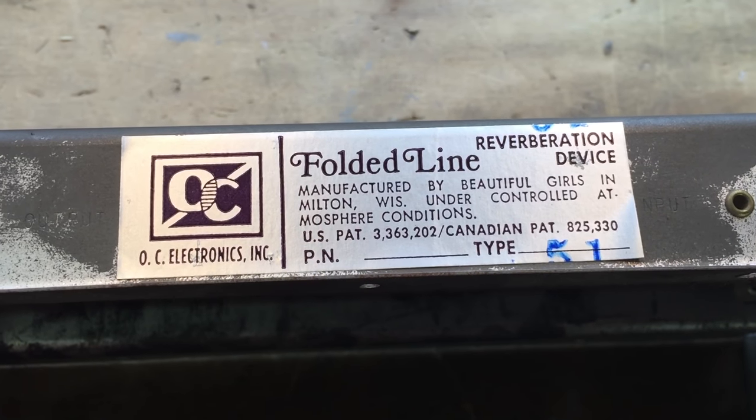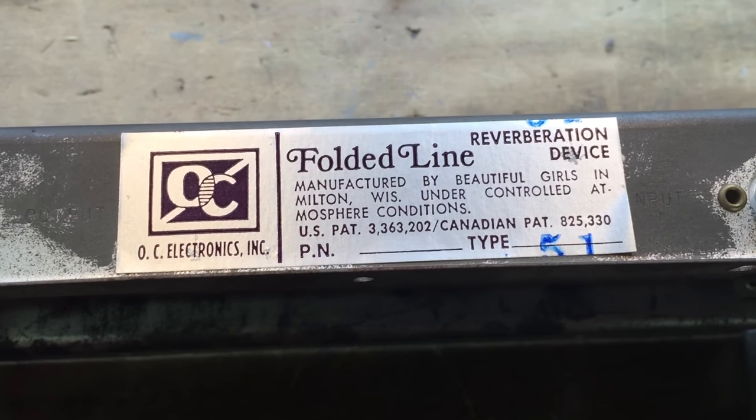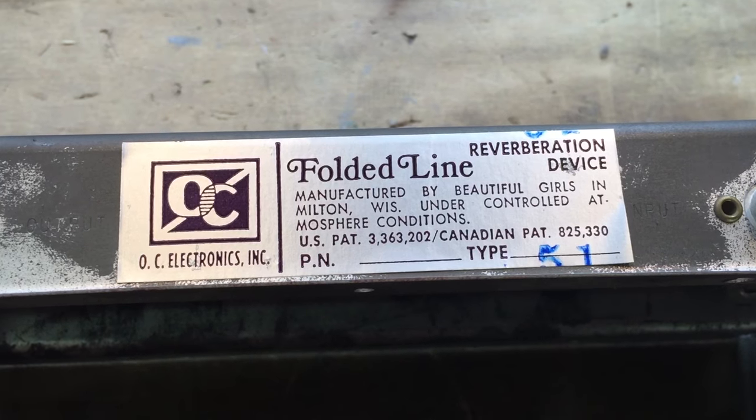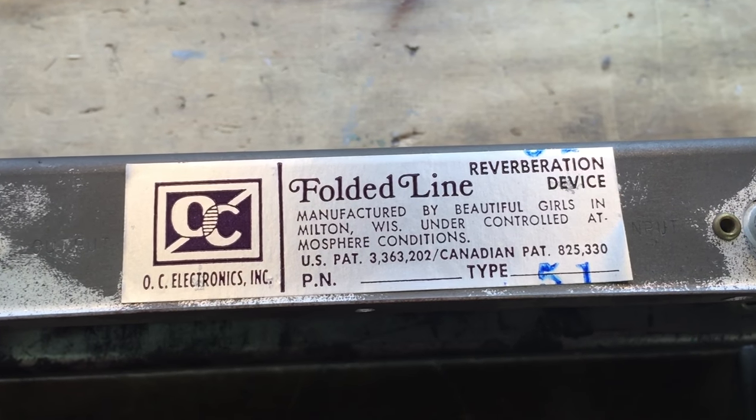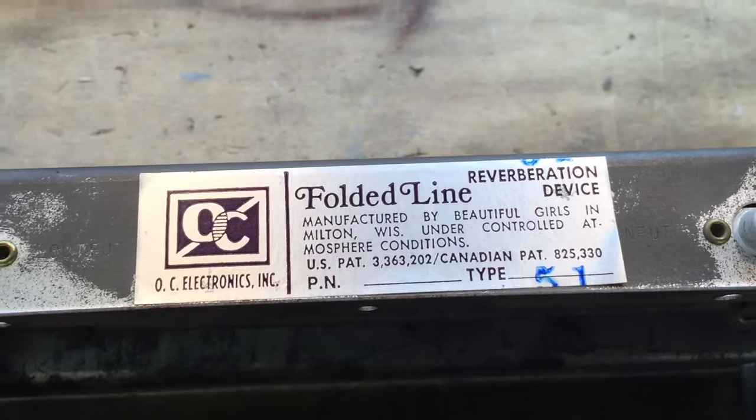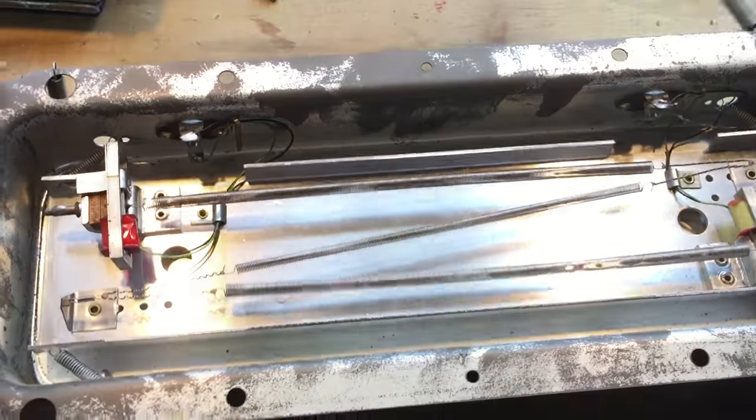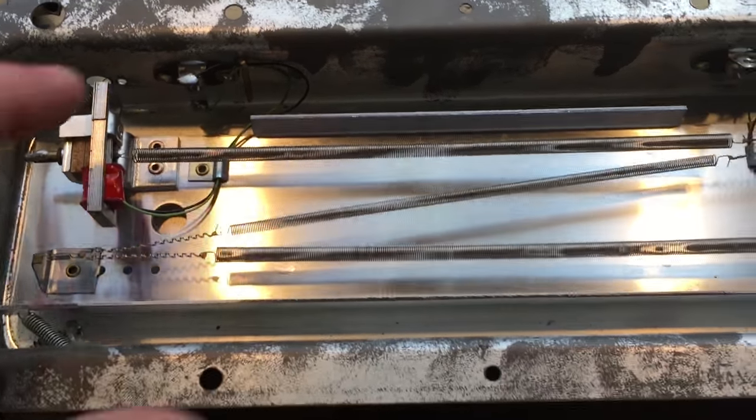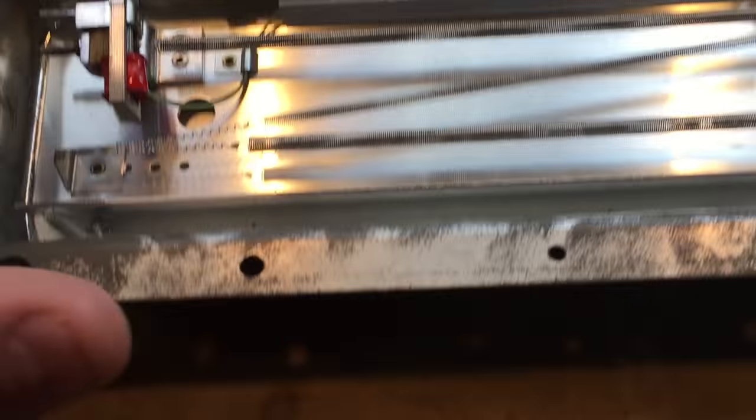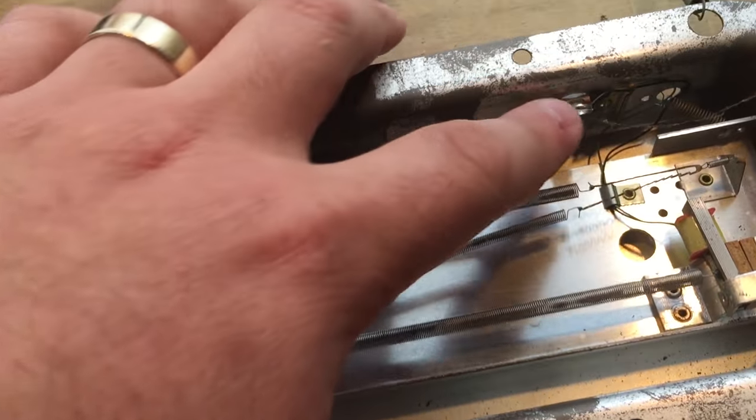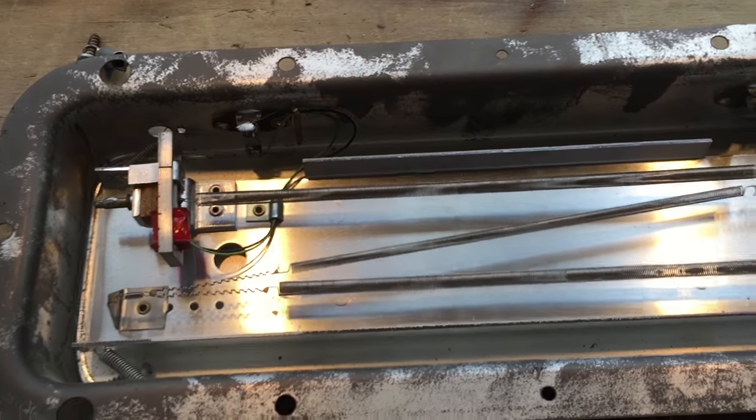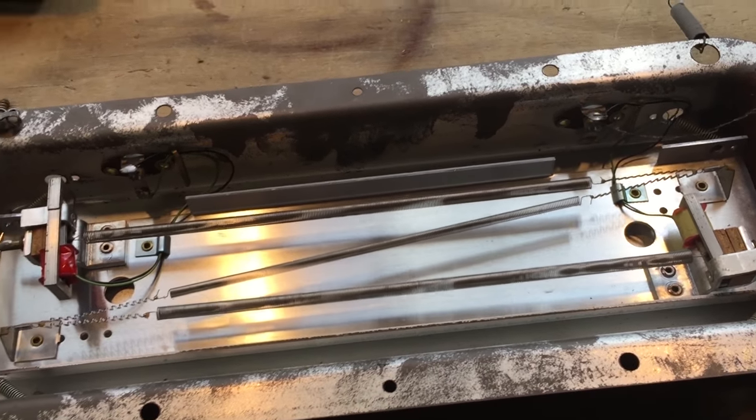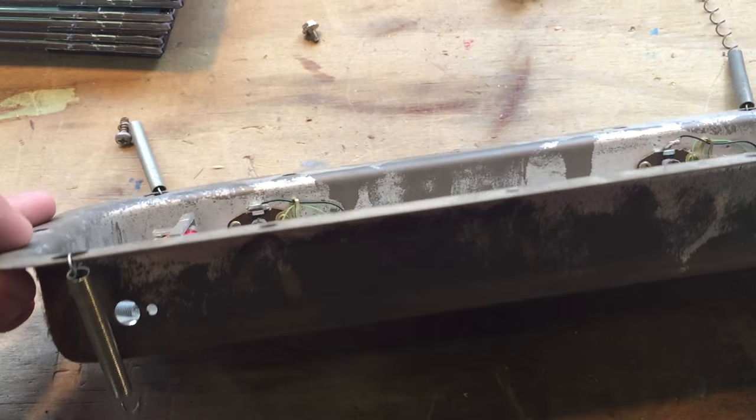And the last thing I'll show in this particular update is this folded line reverberation device by OC Electronics, manufactured by Beautiful Girls in Milton under controlled atmosphere conditions. And all it is, is a tin with some springs in it and a little device there that takes the input or output, threads it through the spring mechanism, and then feeds it out that end. It's quite an interesting way of doing reverb, and I understand that's the standard way of achieving it in an analog method, but I find that quite interesting.